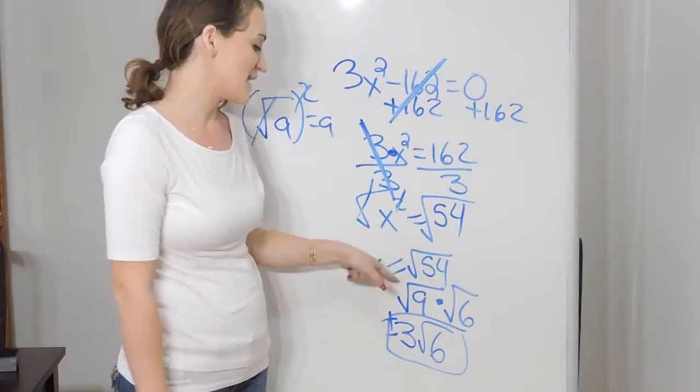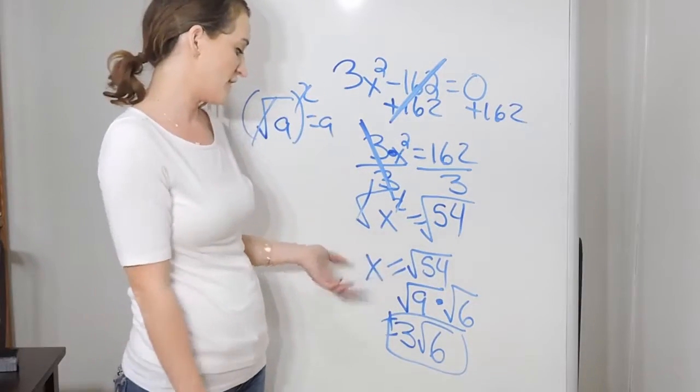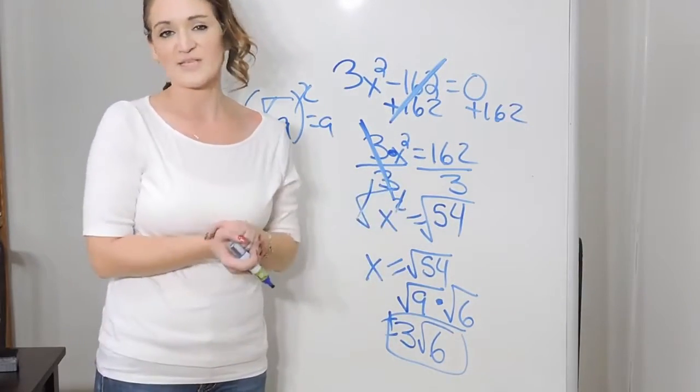Because remember, when we do take the square root of something, we do have the positive and the negative version of it. So plus or minus 3 square roots of 6.